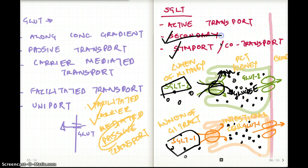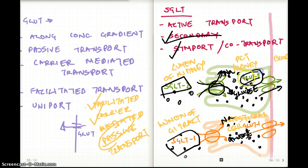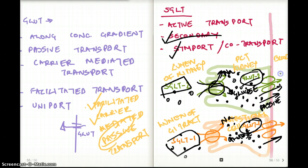This is secondary active transport because it uses the force of sodium's gradient rather than ATP directly. Once glucose is inside the kidney or intestinal cells, it enters the blood through GLUTs — GLUT2 in the kidney and GLUT1 in the intestine. This process of moving from cell into blood is passive, because concentration is higher in the cell and lower in the blood. So the movement from cell to blood via GLUT2 or GLUT1 is facilitated, carrier-mediated, passive transport.